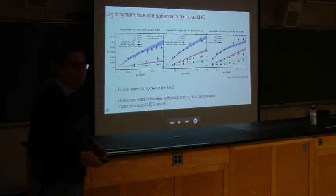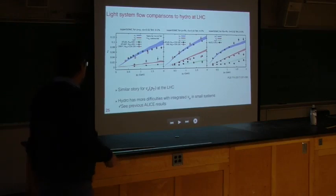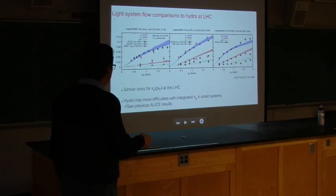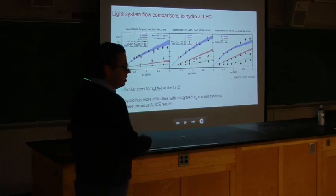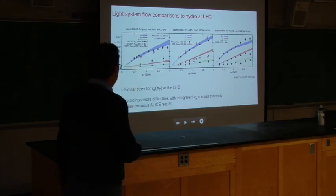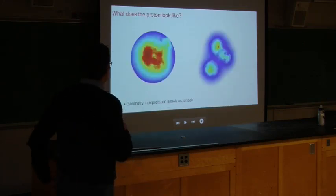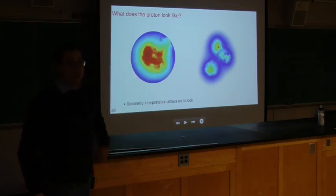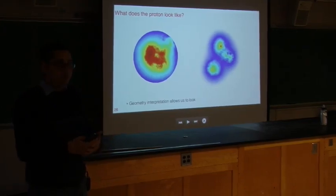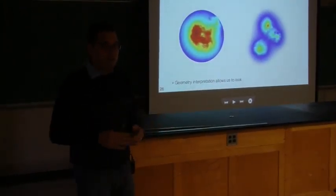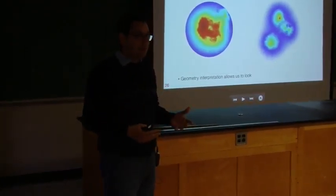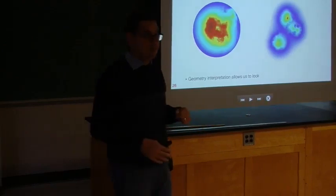Very similar measurements of momentum anisotropy versus particle momentum were performed at the LHC, and again the hydrodynamic models assuming a QGP-like response provide a good description of the data. So the QGP-like interpretation of small-system collectivity seems to have won out, which is quite surprising.